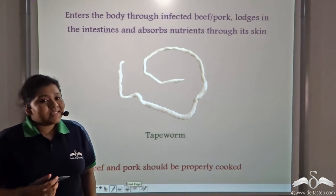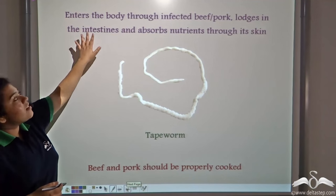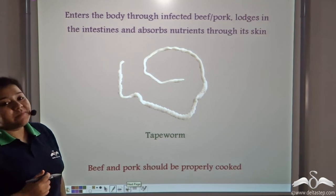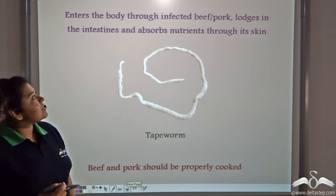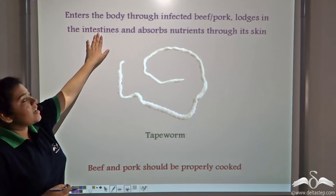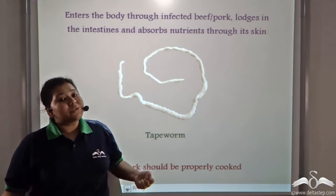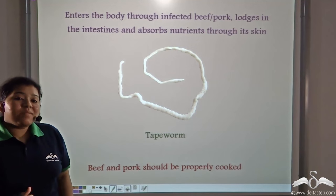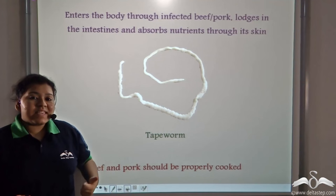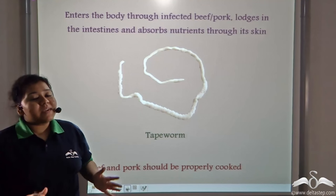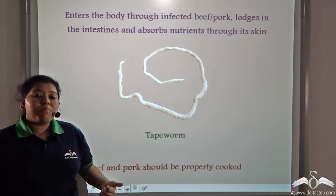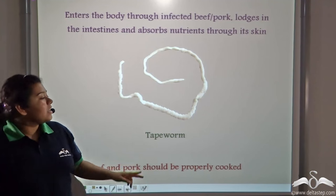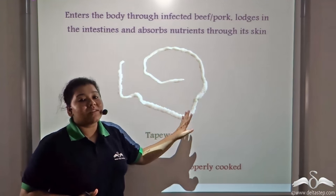The tapeworm enters the body through infected beef and pork and lodges itself in the intestines, absorbing nutrients from there. Care must be taken to ensure that beef and pork are properly cooked, because at high temperatures these worms cannot survive.